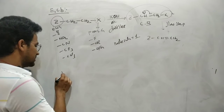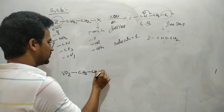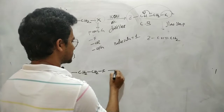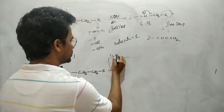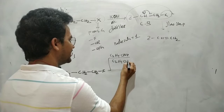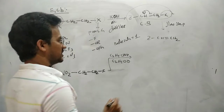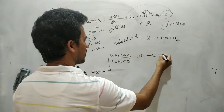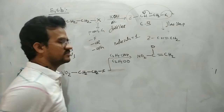Now let us take an example: NO2-CH2-CH2F. This substrate on reaction with C2H5ONa and C2H5OD (deuterated solvent) gives a product with a C=C double bond and deuterium incorporated — specifically CH2 and deuterium on the product.